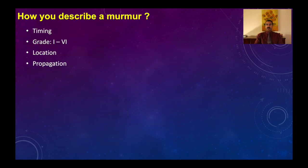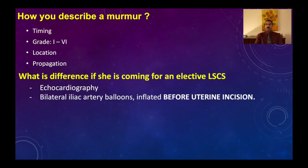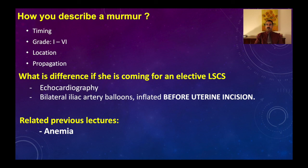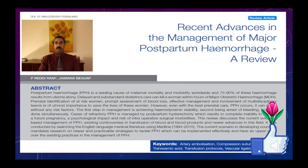When describing a murmur, characterize: timing (systolic or diastolic), grading (1–6), location (apical or basal), and propagation (to the axilla or neck). For the elective scenario where the patient presents with known painless or painful bleeding, arrange echocardiography for the murmur and bilateral internal iliac artery balloon insertion at the radiology suite before caesarean section. Balloons are inflated immediately before uterine incision and deflated once bleeding is controlled.